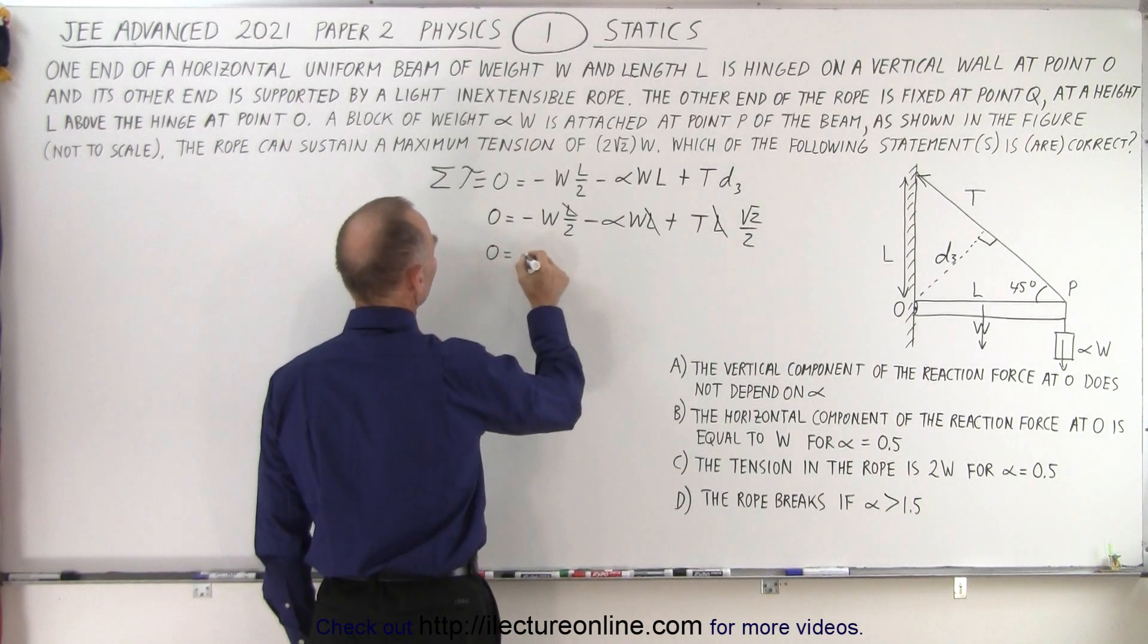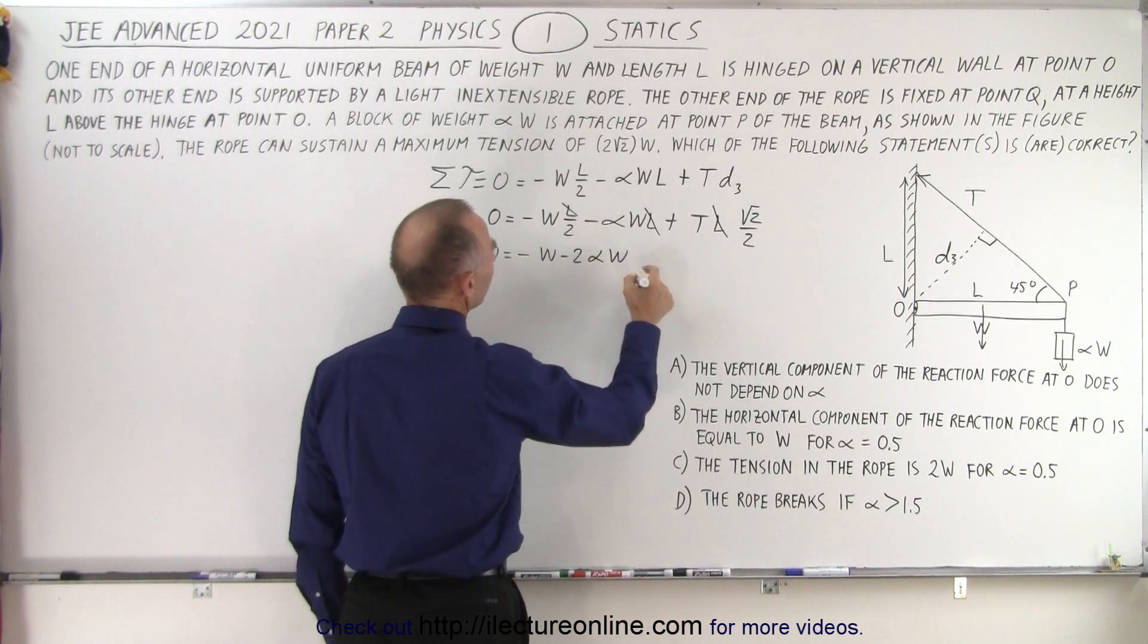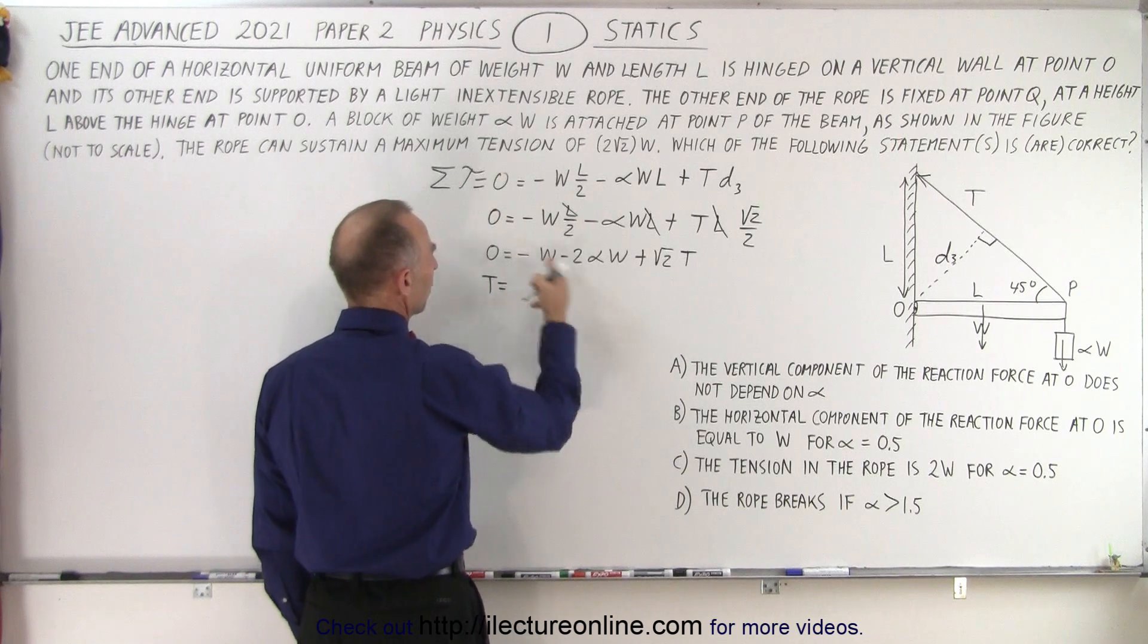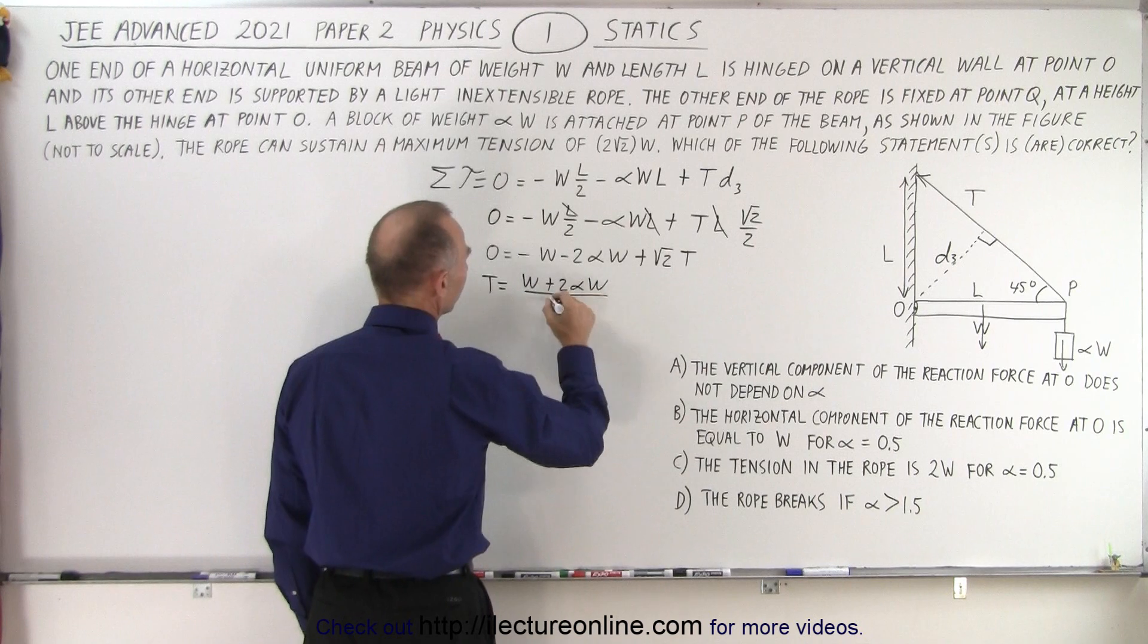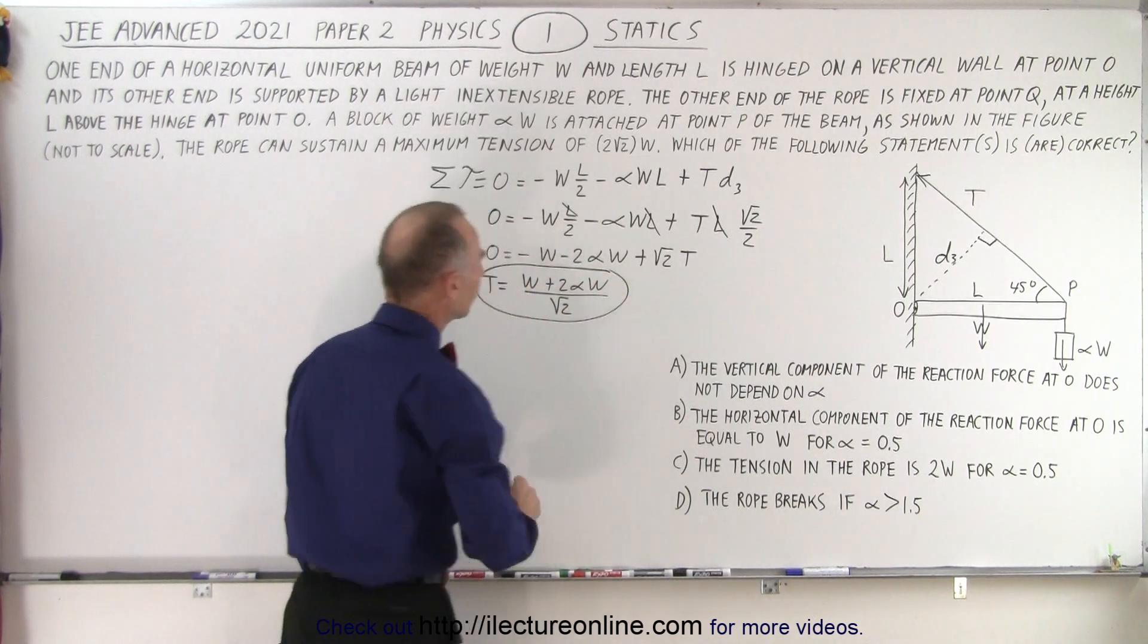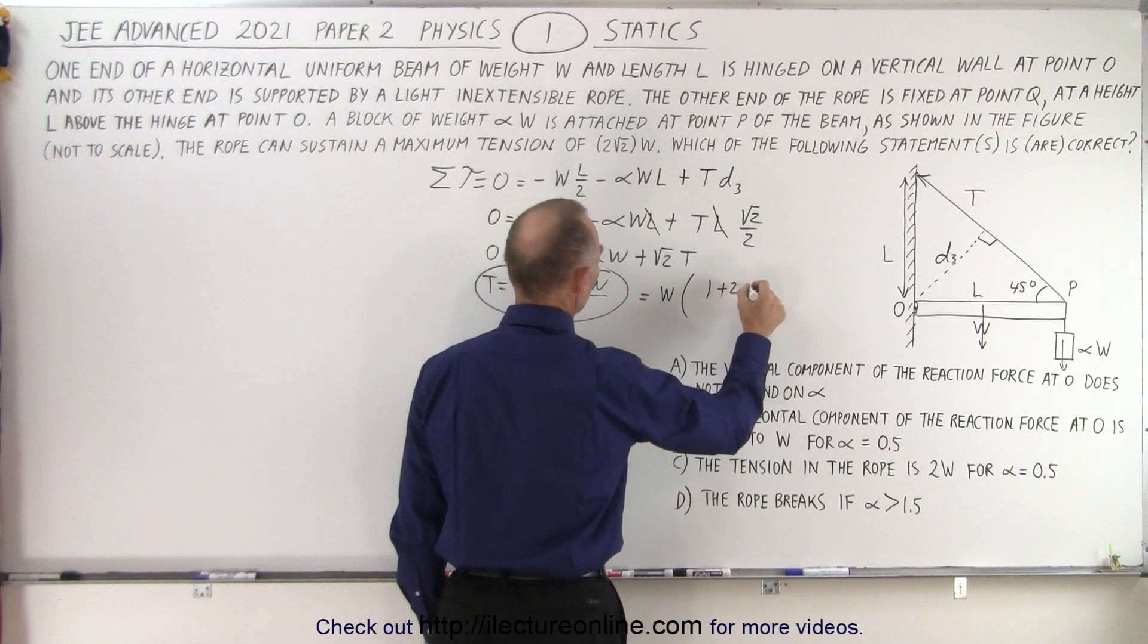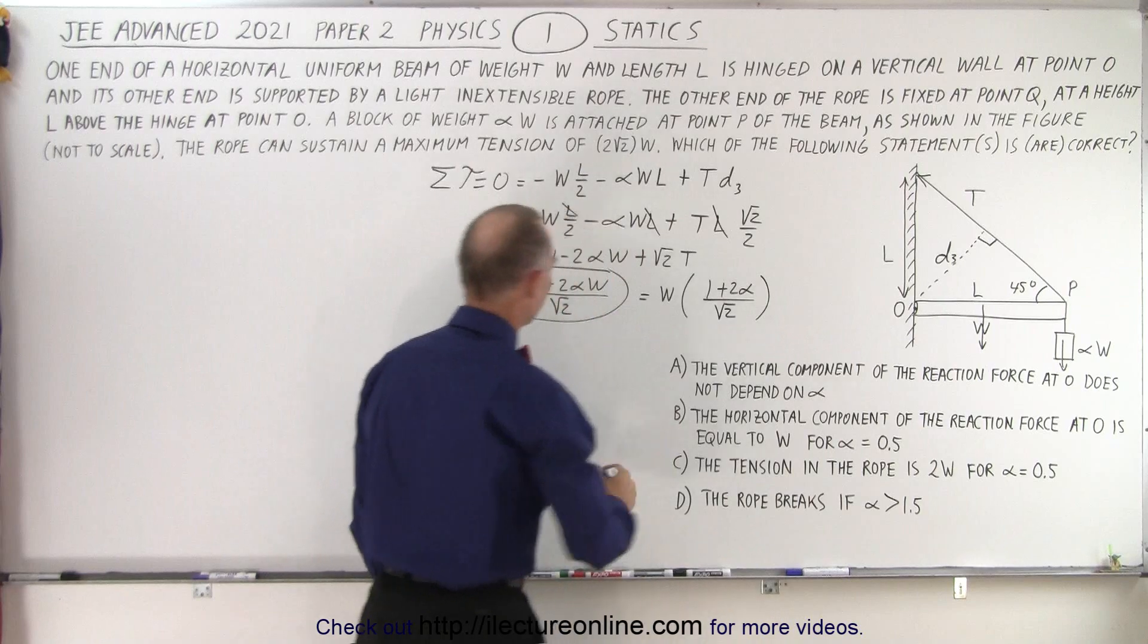Maybe just to make things a little bit easier, let's multiply everything by 2. So we get 0 is equal to minus W minus 2 alpha W, and here that would be plus the square root of 2 times the tension. So then we have the tension is equal to, move this across, we get W plus 2 alpha W divided by the square root of 2. So there we go. There is the tension. And if you want to pull out a W, you can say that this is equal to W times 1 plus 2 alpha divided by the square root of 2.